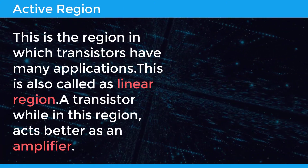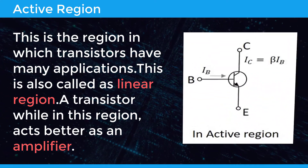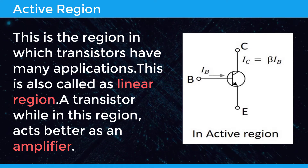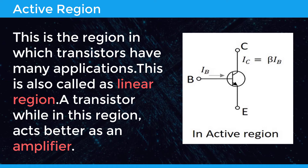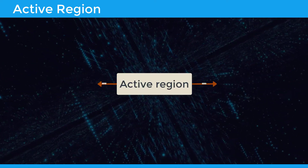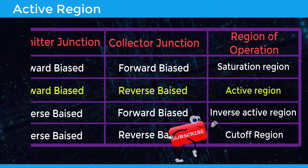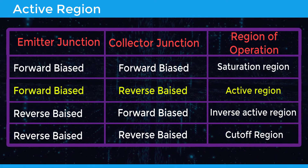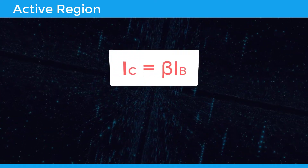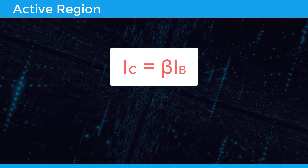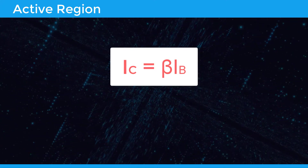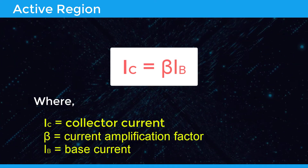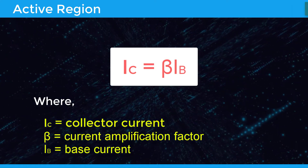The active region is where transistors have many applications. It is called the linear region, and a transistor in this region acts best as an amplifier. This region lies between saturation and cutoff. The transistor operates in the active region when the emitter junction is forward biased and the collector junction is reverse biased. In the active state, collector current is beta times the base current: IC = β·IB, where IC is the collector current, beta is the current amplification factor, and IB is the base current.